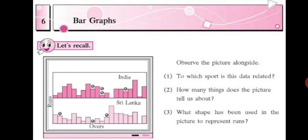Second, how many things does the picture tell us about? The picture tells us about the runs, the overs, the wickets. Question number 3. What shape has been used in the picture to represent runs? Runs have been shown by bars, rectangular bars.